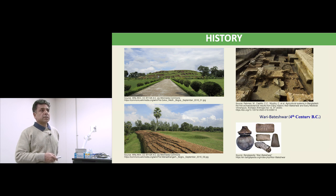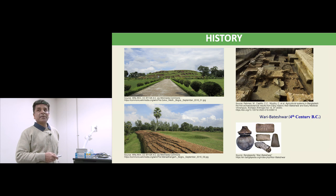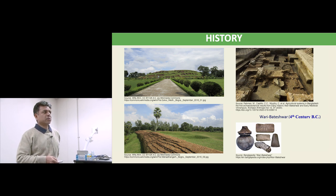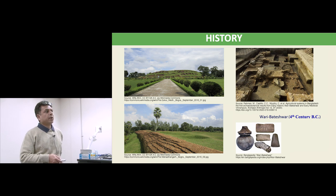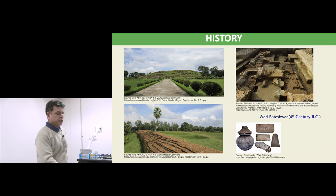This is Mahastangarh — a Buddhist palace with 170 rooms, dating to the 3rd century BC, discovered about 10 to 15 years ago. These are the bricks used to build it, and these stone items — household objects — were found inside the construction.